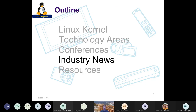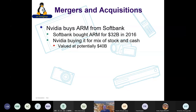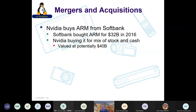For industry news: Nvidia has agreed to buy ARM from SoftBank. ARM has more processors in the world than anyone. SoftBank bought ARM for about $32 billion in 2016 and Nvidia is buying it for a mix of stock and cash valued at potentially $40 billion. This is all under intense scrutiny from antitrust groups and government agencies.